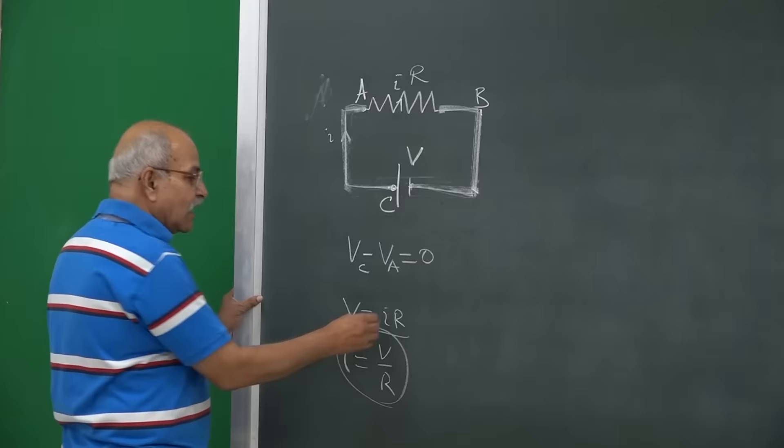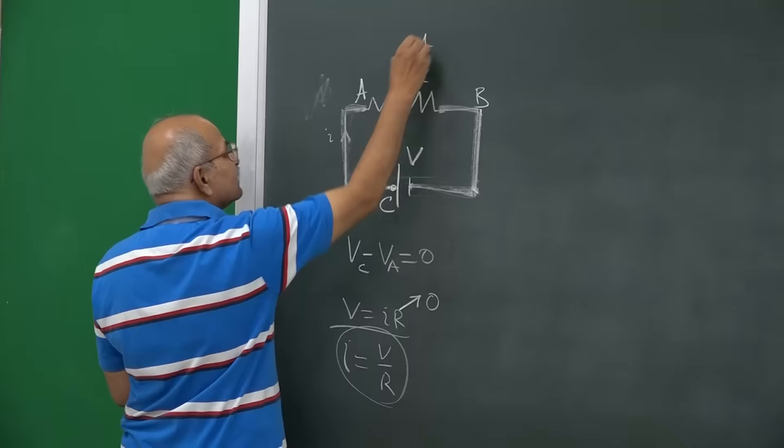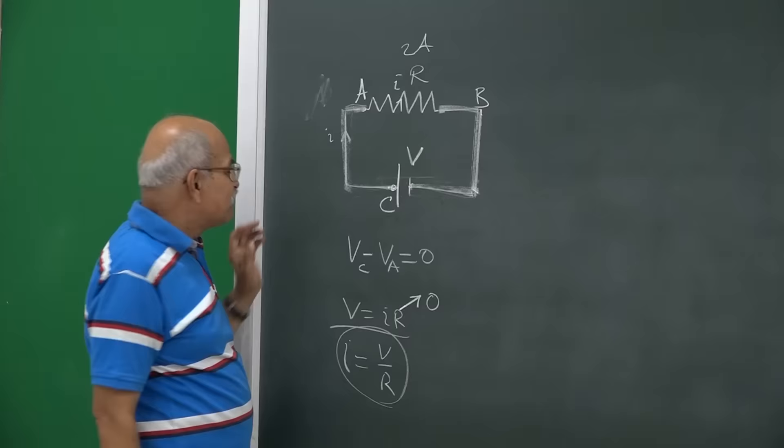if this resistance is 0 and then if I is let us say 2 amperes, suppose it is a 6 volt battery and then this is 3 ohms resistor and the current is 2 amperes. This I is 2 amperes,